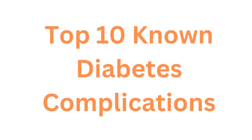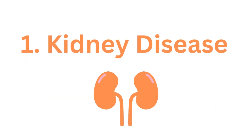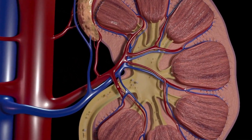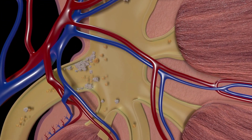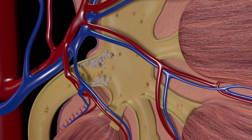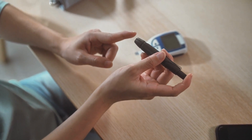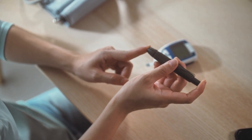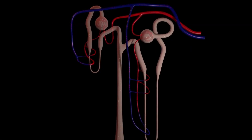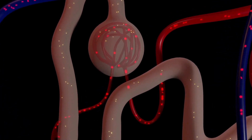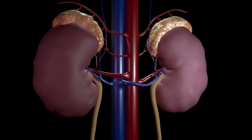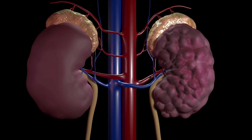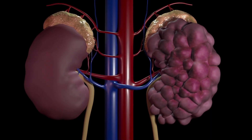Top 10 known diabetes complications. Number one: kidney disease. The kidneys' primary function is to filter blood for waste and circulate the purified blood back through the body. When the kidneys fail, the body is unable to flush out waste and regulate its fluid and salt levels. Diabetes mellitus, a disease that causes high blood sugar levels, can lead to kidney failure, as high blood sugar damages the millions of small filtering units. This condition causes kidney failure over time and typically worsens gradually.